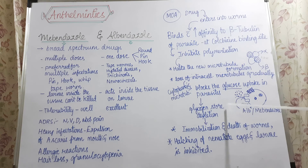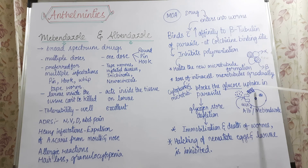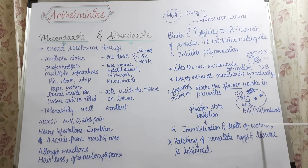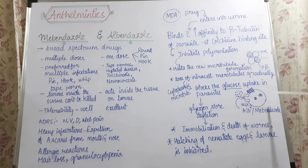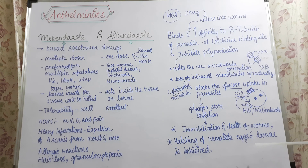Because glucose cannot enter the worm, the worm starts using up all the glycogen present inside, and the glycogen store becomes depleted. Once glycogen is over and the worm can neither take glucose from outside nor produce it inside, immobilization and death of the worms occurs. This leads to lack of movement and death of the worms, and also stops the hatching of eggs and larvae. That is how mebendazole and albendazole exert their anthelmintic activity.